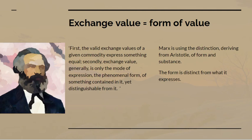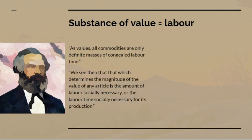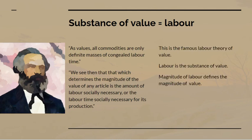By exchange value, Marx means the same thing as form of value. Exchange value is generally only the mode of expression, the phenomenal form of something contained in it yet distinguishable from it. Marx here is using the distinction from Aristotle between form and substance — the form is distinct from what it expresses. What the form expresses, in the case of commodities, is the value substance. Of this he says: as values, all commodities are only definite masses of congealed labour time. What determines the magnitude of the value of any article is the amount of labour time socially necessary for its production. This is the famous labour theory of value — that labour is the substance of value, and the magnitude of labour used determines the magnitude of value.